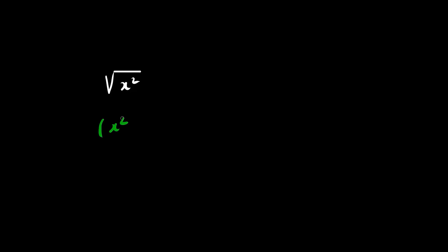Let's try this enrichment question. What's the square root of x squared? It might be tempting to say that x squared all to the one-half simply can be multiplied such that the answer is x to the 1, or just x. But this is not completely correct. The true answer is the absolute value of x.